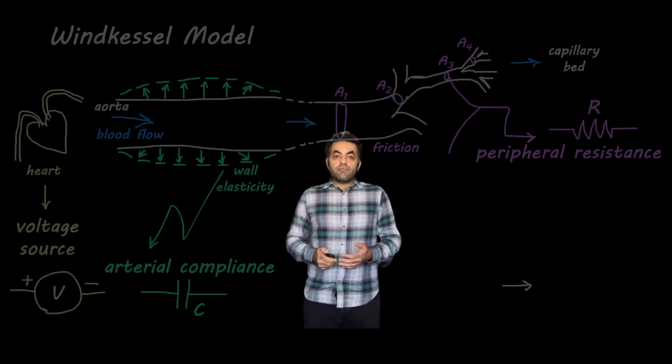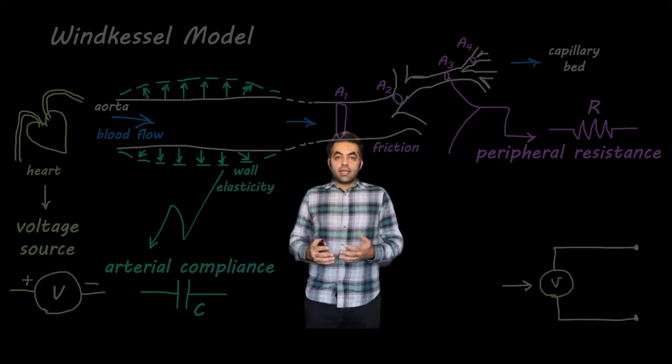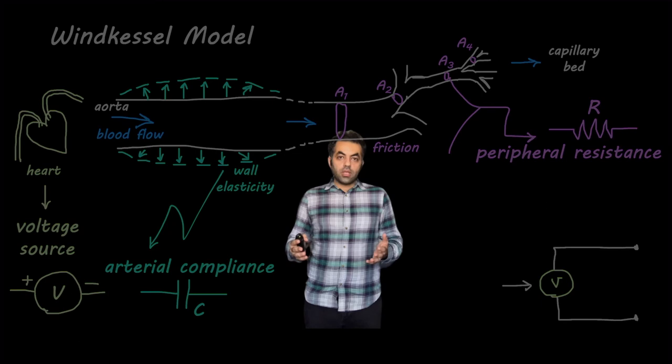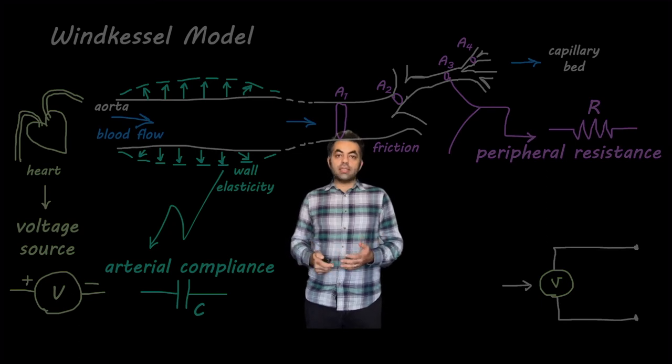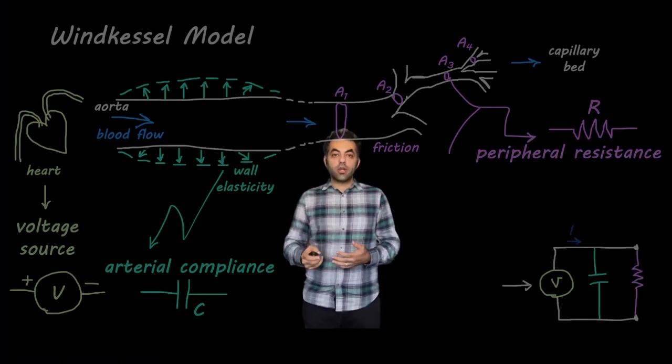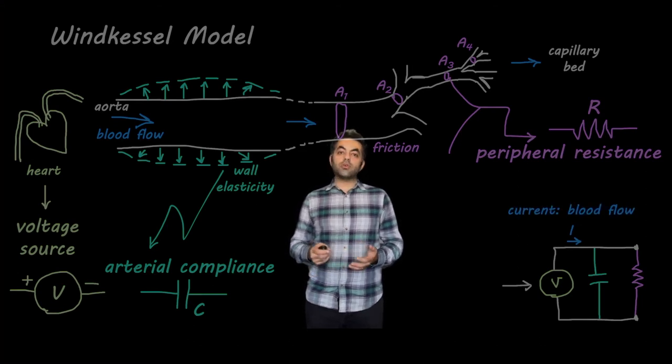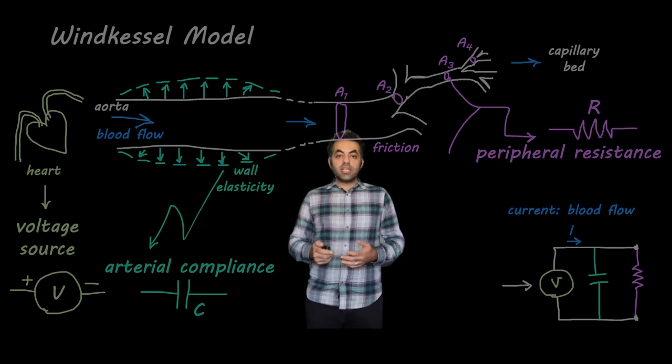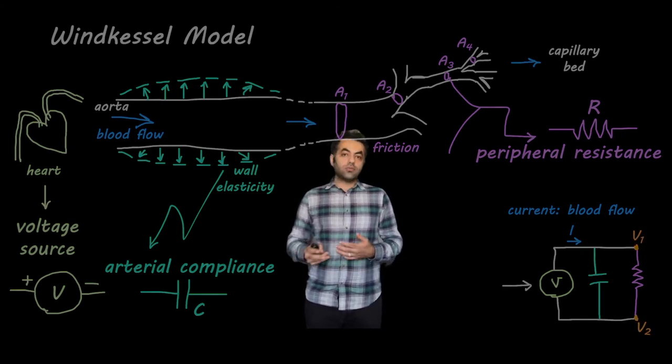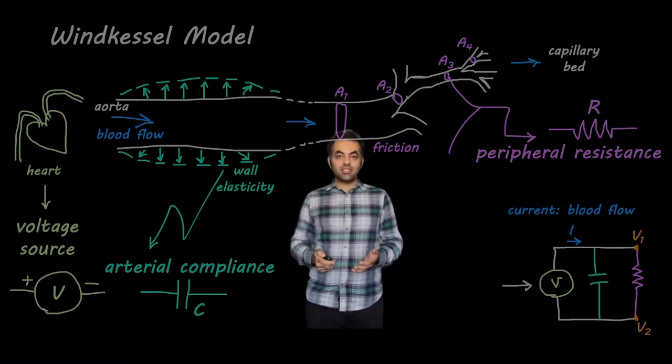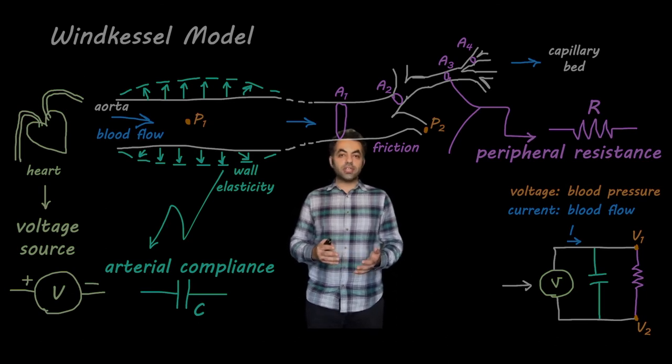Now, if we just draw an electrical circuit with a voltage source and then include a capacitor and a resistor, then in this electrical circuit, the electrical current would be similar to blood flow that we have in our cardiovascular system. And the voltage difference between any two points in this electrical circuit is similar to blood pressure and blood pressure difference between any two points in our vessel network.